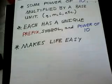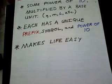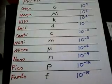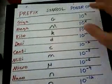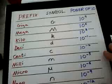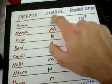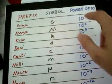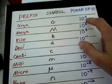Here we have a table of common prefix multipliers. I put the prefix on the left, the symbol for the prefix in the middle, and the power of 10 associated with that prefix on the right.